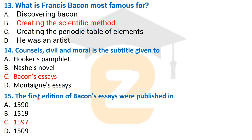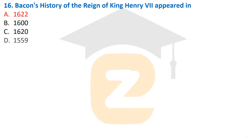The first edition of Bacon's Essays was published in 1597 with 10 essays. These 10 essays published in 1597 are known as Bacon's Essays in the history of English literature.